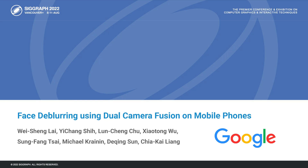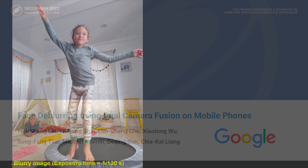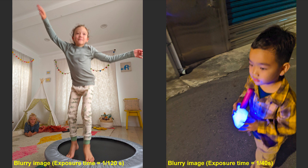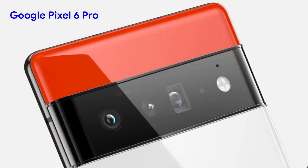In this work, we present a face de-blurring method for mobile phones using a dual-camera fusion system. Mobile photography is challenging for kids' activities and low-light scenes, as we often get blurry photos due to fast subject motion or long exposure time. To address motion blur, we propose a robust and efficient system to de-blur faces on mobile phones. Our method leverages the synchronized dual-capture system from the wide and ultra-wide cameras, which are commonly available on modern premium smartphones.